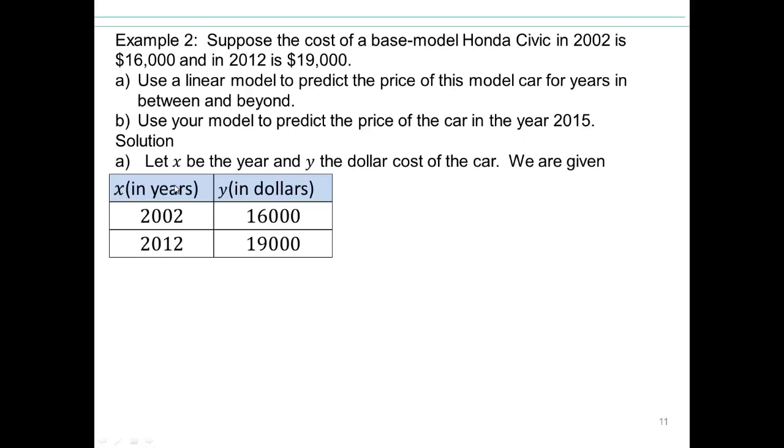So we have data points given to us. X, we'll call, is the number of years. And Y is in dollars. So in 2002, the base model cost $16,000. And in 2012, the base model cost $19,000. So first, let's just get slope. Because any time you want to use linear model, which means line, you have to have slope or the rate of change. So you have $19,000 minus $16,000. That's the rise. 2012 minus 2002. That's the number of years. So we have $3,000 for every 10 years, or $300 per year.